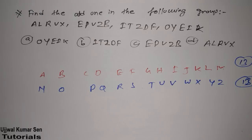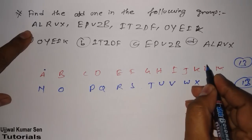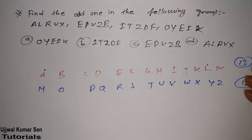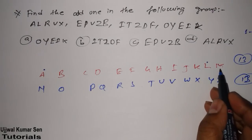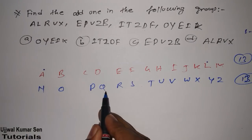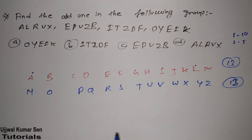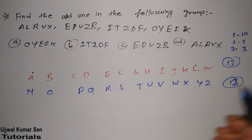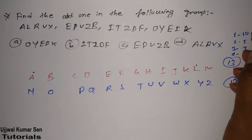Now we are going to look at the arrangement of the letters given. They have given A, then L — the gap in between is 10. Write down 10 for the first gap. Then we have R after L — the second gap is 5. Next is V after R — the third gap is 3. Then after V we have X — so the fourth gap is 1. So the gaps are following the pattern: 10, 5, 3, 1.